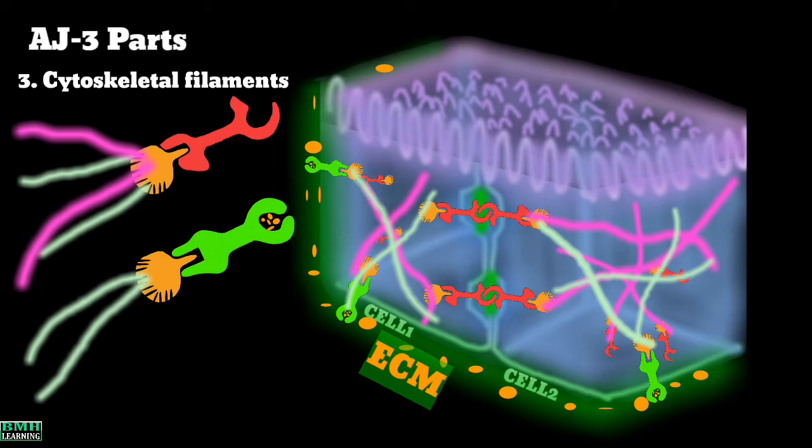Now the cytoskeleton proteins can be either actin filaments or intermediate filaments.